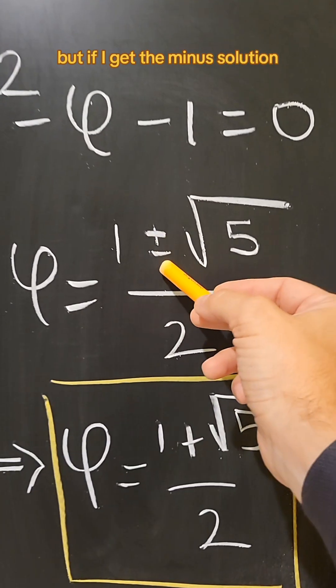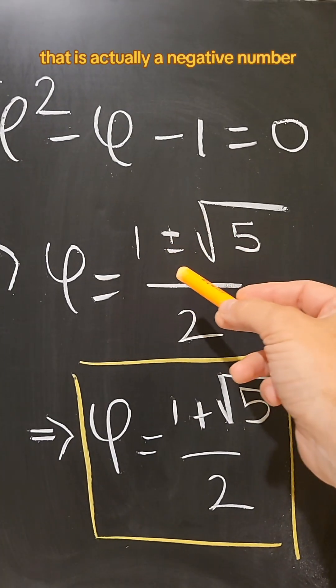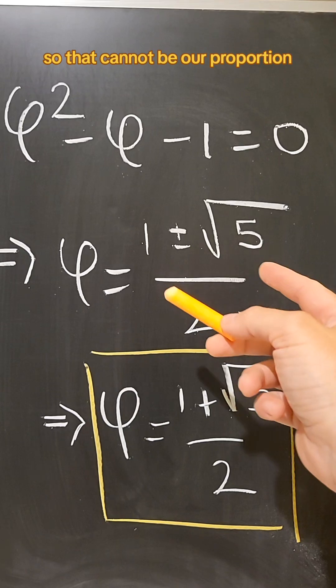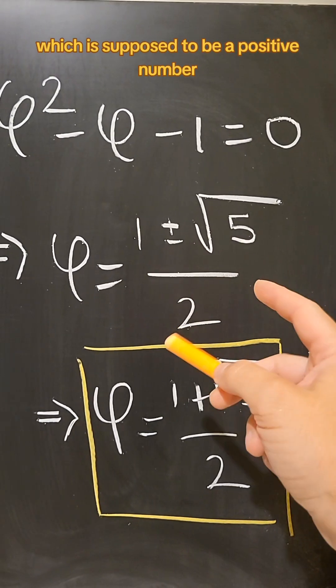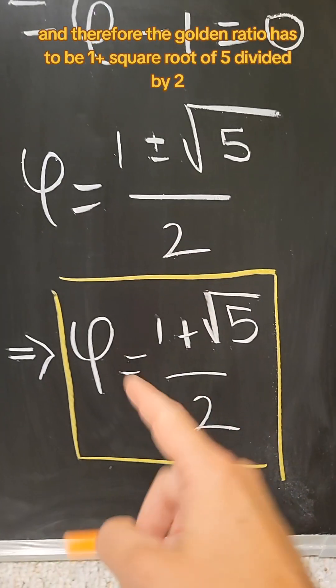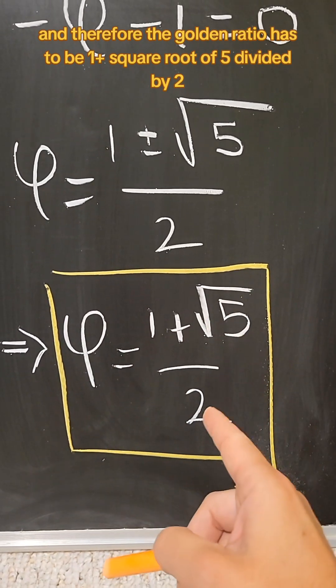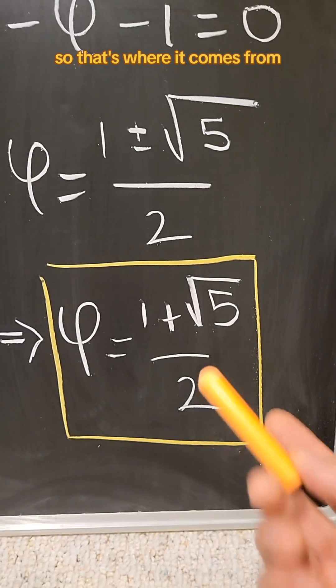But if I get the minus solution, that is actually a negative number. So that cannot be our proportion, which is supposed to be a positive number. And therefore, the golden ratio has to be 1 plus the square root of 5 divided by 2. So that's where it comes from.